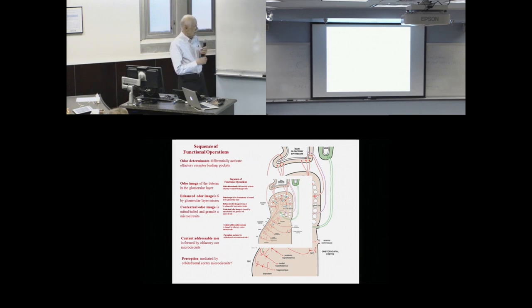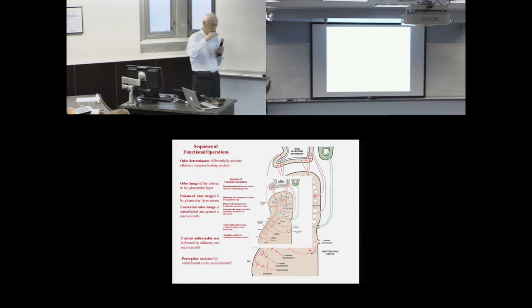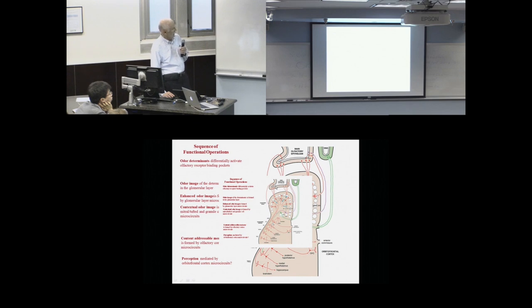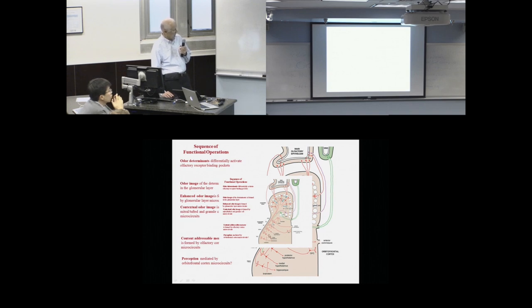The third point is that we need an overall understanding of what the sequence of operations is. Since we've worked at all levels of the olfactory pathway, this indicates we need some hypothesis about what operation is carried out at the first level. We think it is in terms of odor determinants projecting to form an odor image at the glomerular level, then enhancement at the glomerular level, then lateral inhibition in the granule cells, then the content-addressable memory that Lou Haberly proposed for the olfactory cortex, and finally perception. People doing behavior don't know for sure whether conscious perception of odor arises in the olfactory cortex or at the neocortical level.